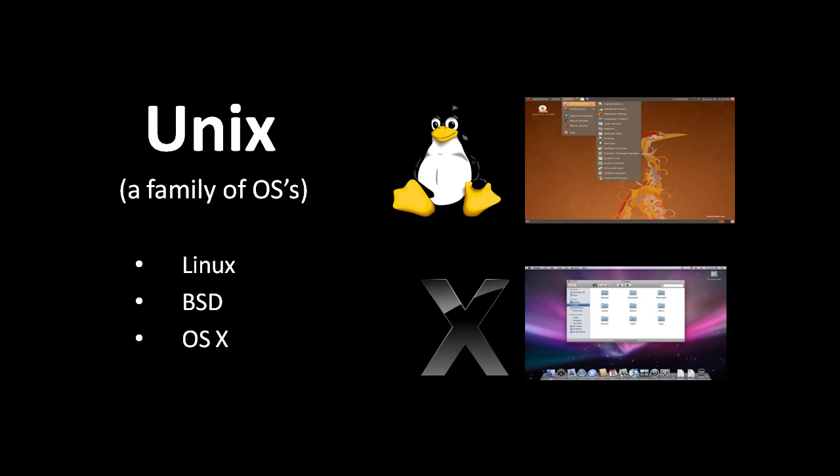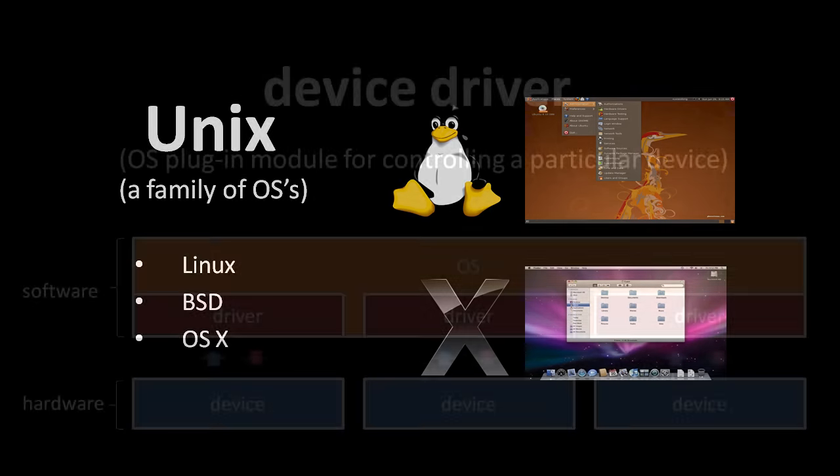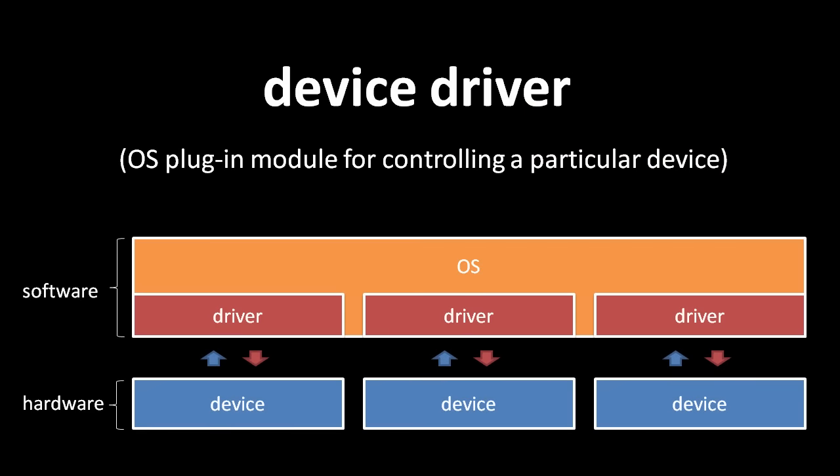Except when we discuss file systems, all of the information in this unit will be platform agnostic, applicable to both Windows and Unix systems. A device driver is a plug-in module of the OS that handles the management of a particular I/O device. Some standardized devices may function with a generic driver — for example, a USB mouse may perform all common USB mouse functionality with a driver written for a generic USB mouse. However, many devices require a more specific driver.